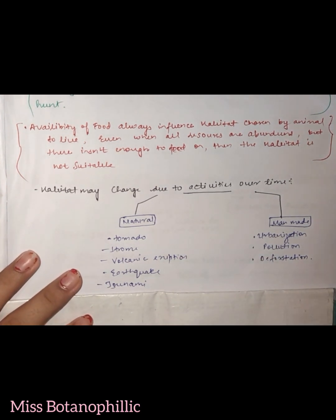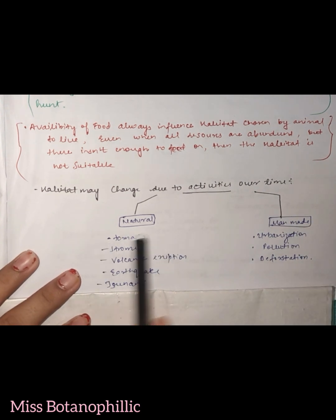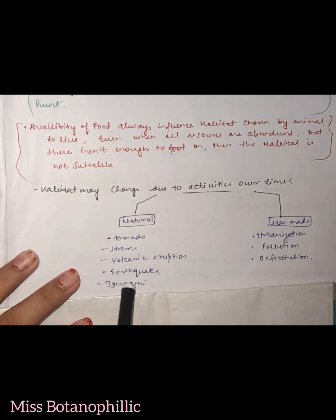If we talk about natural habitat destruction, there are examples like tornadoes, storms, volcanic eruptions, earthquakes and tsunamis.